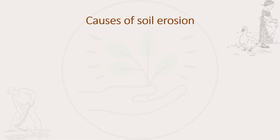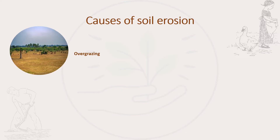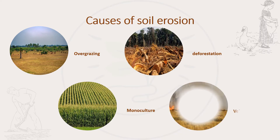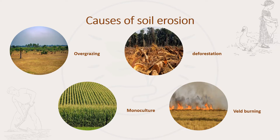Soil erosion is caused by two factors: when the plant cover which protects the soil is removed, and when the slope of the land is too steep. The steeper the land, the greater the rate of erosion. The causes of erosion may include plowing, overgrazing, deforestation, monoculture, as well as veld burning.